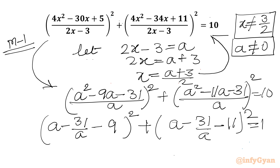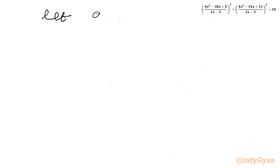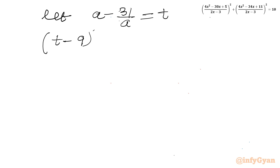Now you can see the expression a minus 31 over a. Let us assume T. I will write a minus 31 over a equal to T. So our equation will become (T - 9)² plus (T - 11)² equal to 10.